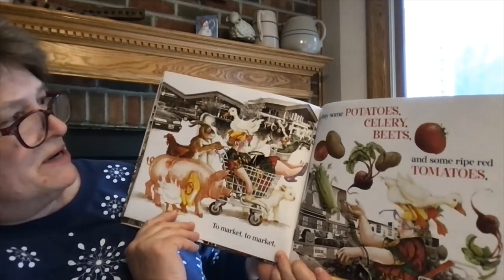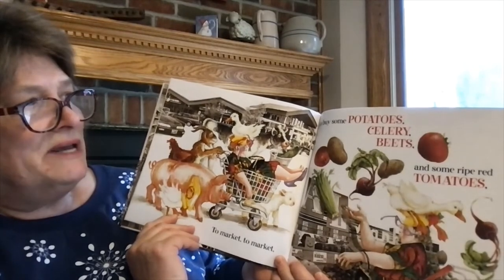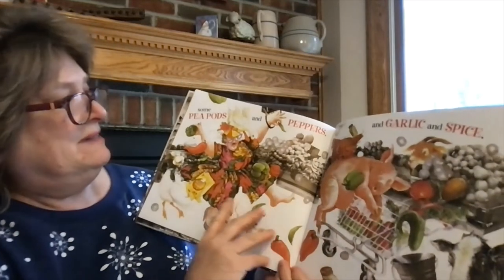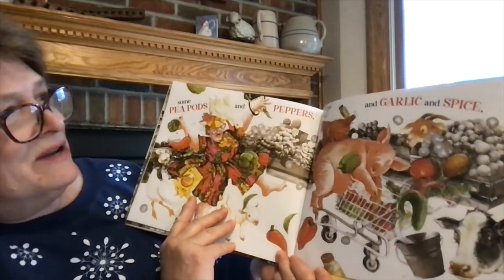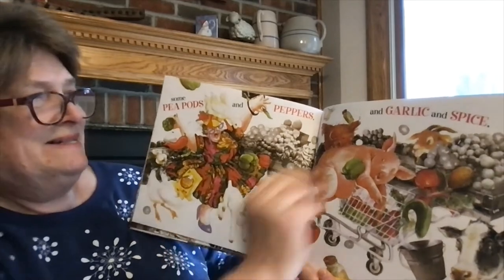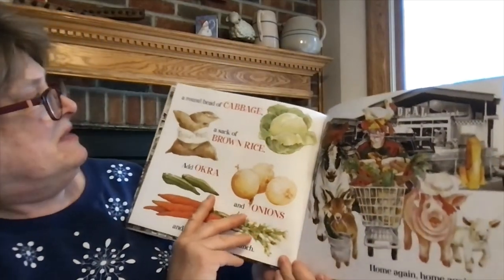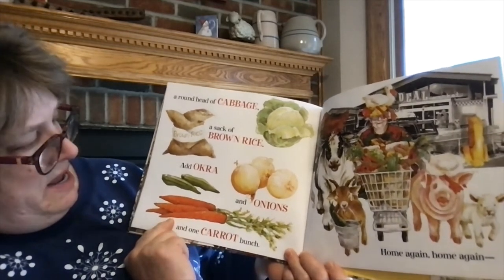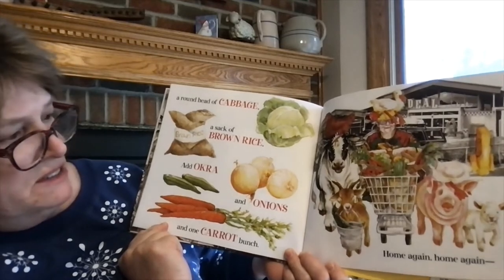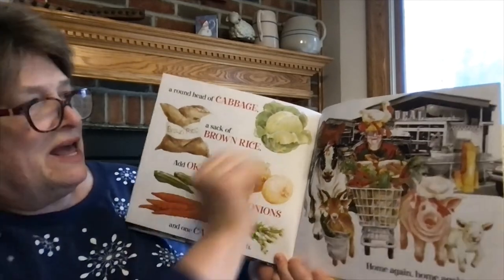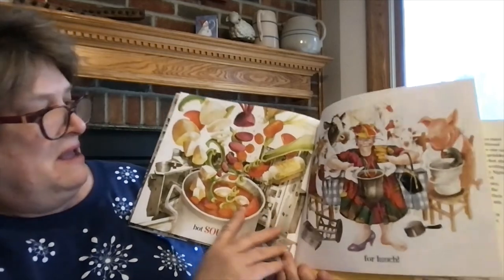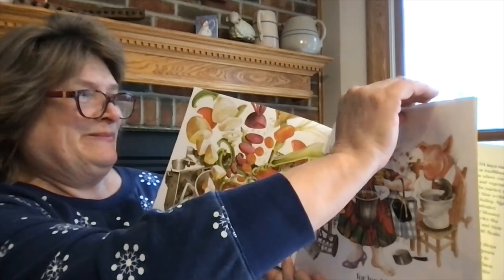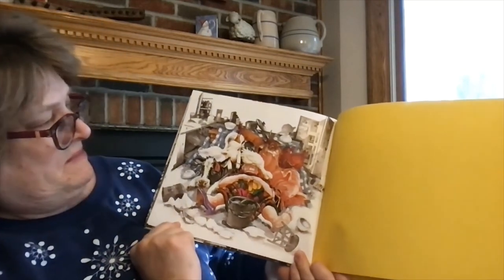To market, to market, to buy some potatoes, celery, beets, some red ripe tomatoes. Some pea pods and peppers and garlic and spice. A round head of cabbage, a sack of brown rice, an okra and onions and some carrots. Home again, home again. Hot soup for lunch. They're exhausted.